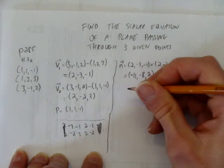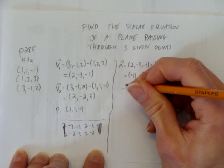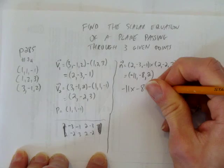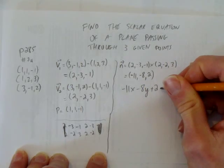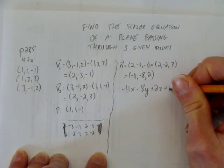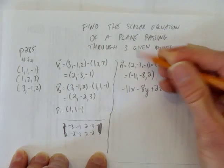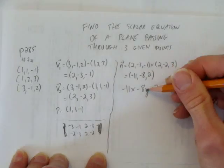Okay, we got our normal vector. That allows us to write the coefficients. We get -11x - 8y + 2z plus some unknown constant d equals 0. And that's because the scalar equation of the plane is just the components of the normal vector.